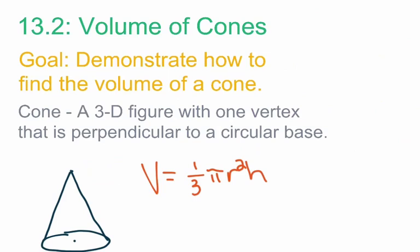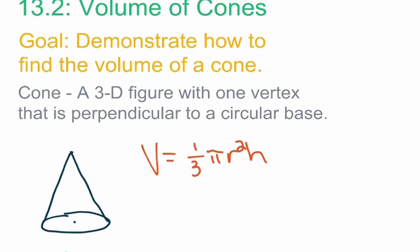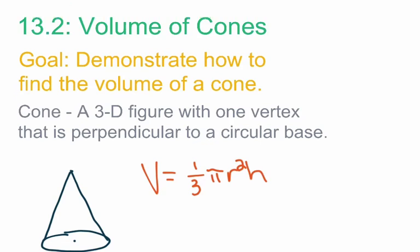That's our look at lesson 13.2, volume of cones. Hopefully you're now able to demonstrate how to find the volume of a cone. As a recap: to draw a cone, draw an oval with a dot in the middle, then a dot directly above it, and add lines from that top dot down to the edges of the oval. Any questions, comments, or concerns — write those down and we can go over them together in class tomorrow.